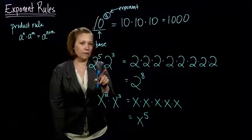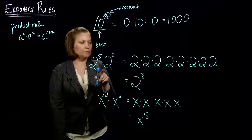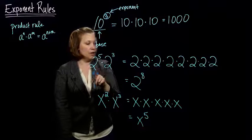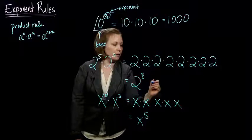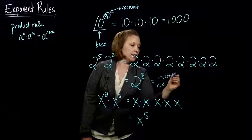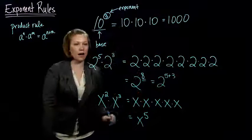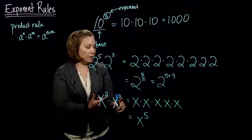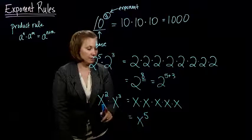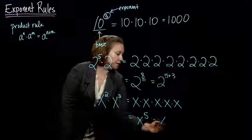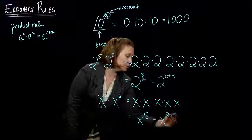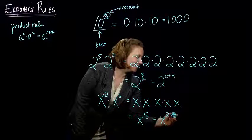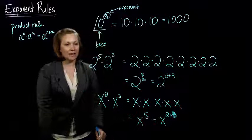So, just like here, we had 2 to the 5th times 2 to the 3rd, and it's the same thing as 2 to the 5 plus 3, which is our 8 that we got when we wrote it all out and counted up. Same thing here, 2 plus 3 is 5, so this x to the 5th is the same thing as x to the 2 plus 3.